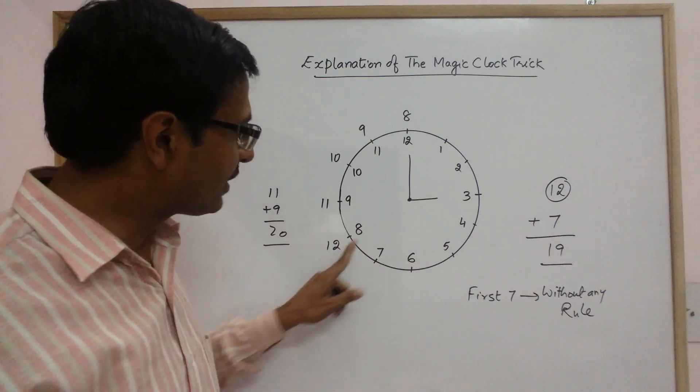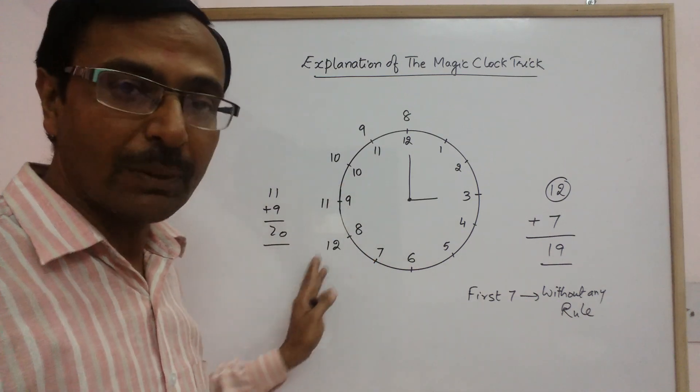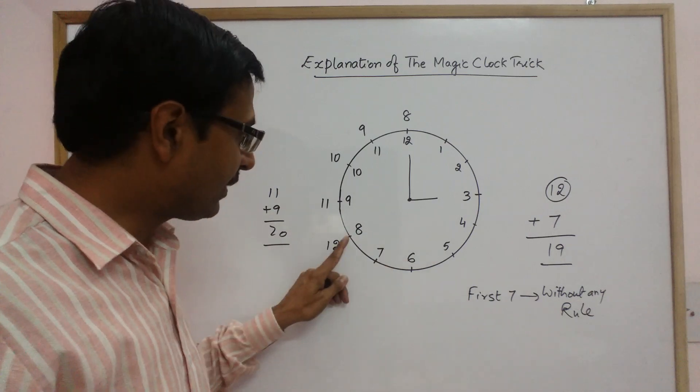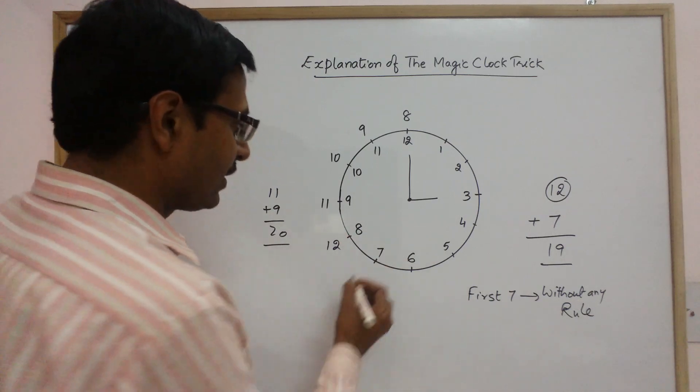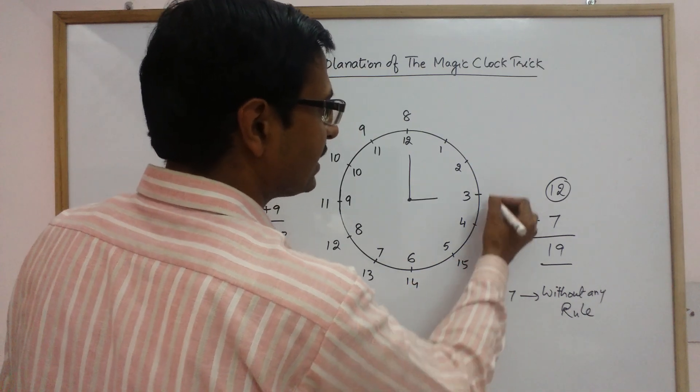Twelfth here. So twelve plus eight. If he has thought eight, this is your twelfth. So twelve plus eight is twenty. So twenty will be completed at eight itself. Now thirteen, fourteen, fifteen, sixteen, seventeen, eighteen, and nineteen.